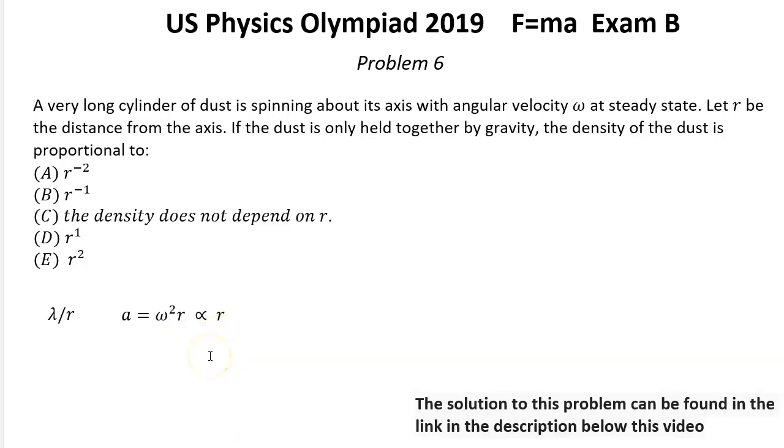Hence, we must have lambda proportional to r square, which is achieved if rho does not depend on r. As in this case, lambda equals pi r square rho. That means the answer C. That was solution for problem number 6.